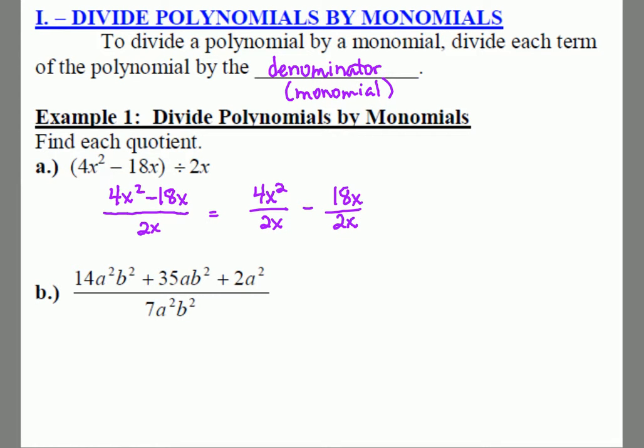We're going to simplify top and bottom by canceling up and down. You cannot cancel diagonally because of the minus sign—only up and down. The 4 and 2 cancel to give you 2 on top, the x and x² leave one x, so you have 2x. The 18 and 2 cancel to give 9, and the x's cancel completely. So you get 2x - 9. That's not so bad!